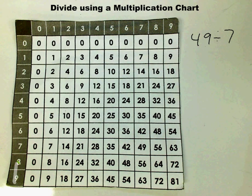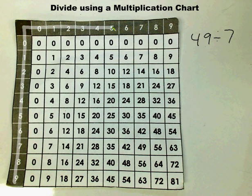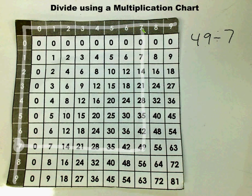These are our factors right here. Outside of our multiplication chart are our factors. So you go ahead and you find the divisor. Then you follow it over until you find the dividend. So once you find the dividend, you take it straight up. So 49 divided by 7 equals 7.